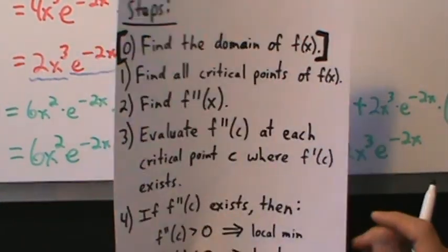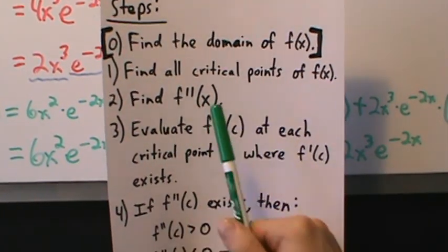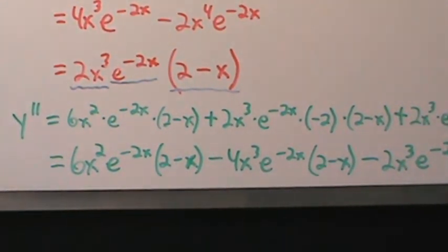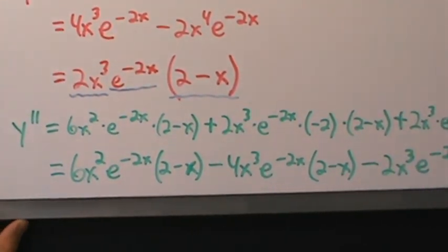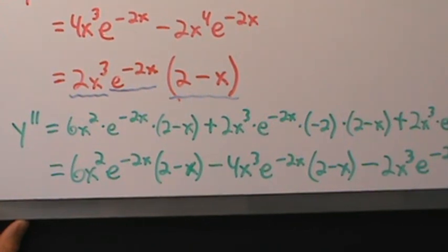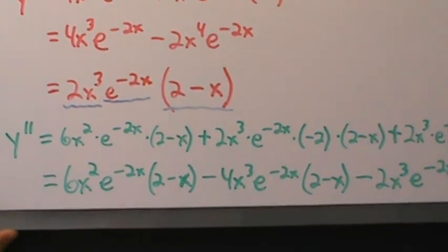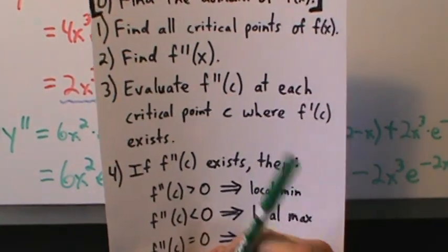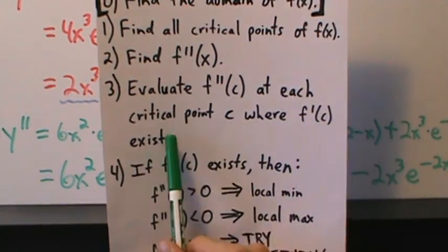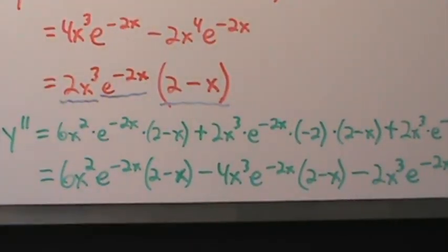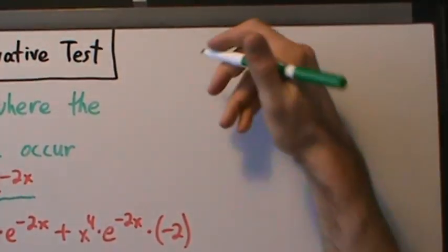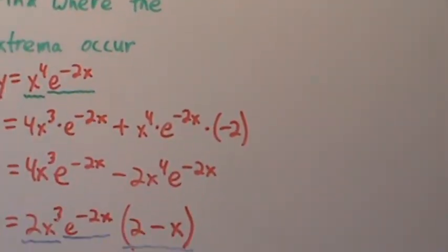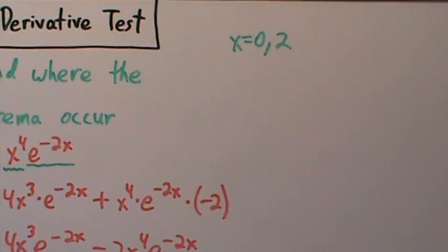That's step two — finding the second derivative. Step three: evaluate the second derivative at each critical point where the first derivative exists. We have two critical points, x equals 0 and x equals 2, and the first derivative exists at both. So we want to find y double prime at 0 and y double prime at 2.